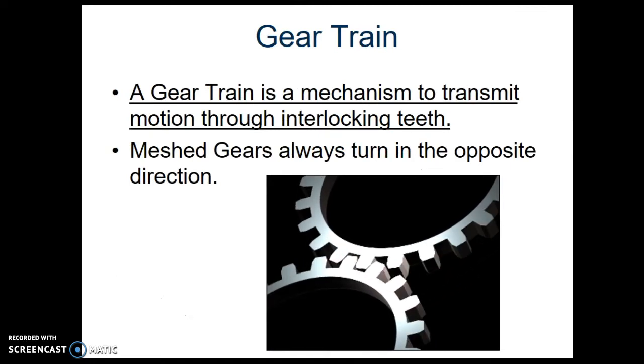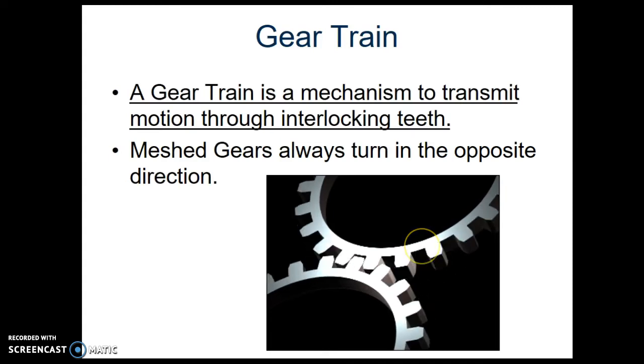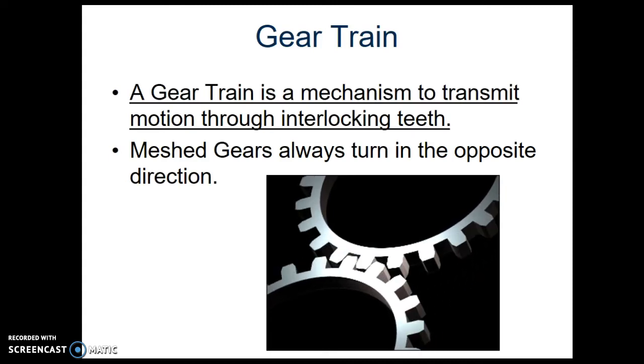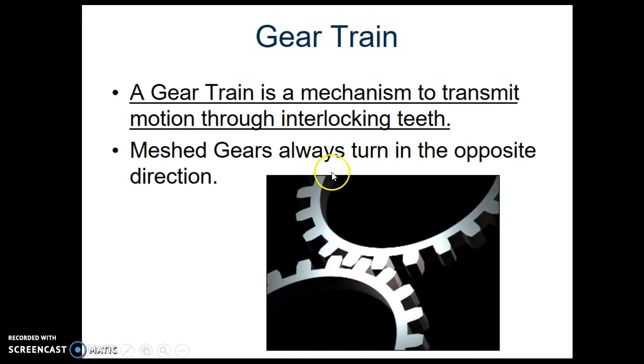Whenever we connect gears together, we call that a gear train. The official definition says it transmits motion through interlocking teeth. And indeed, a gear has to have teeth in order to be called a gear. And when these teeth interlock, it transfers motion from one to the other. Notice that they do spin in opposite directions. So this gear at the bottom is rotating clockwise, and this gear at the top counterclockwise.